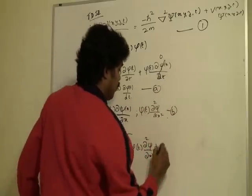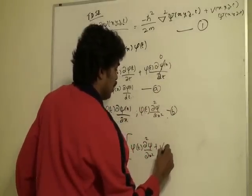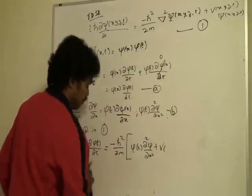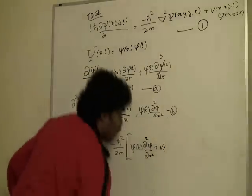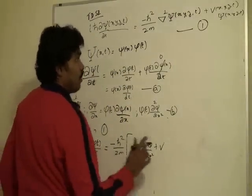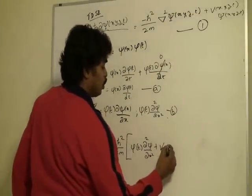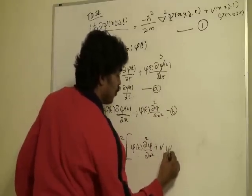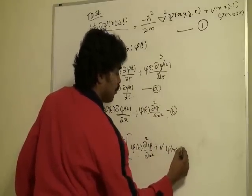This is φ of t ∂²ψ/∂x² plus V into, we can replace this ψ of x by φ of t.